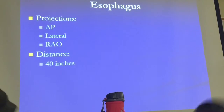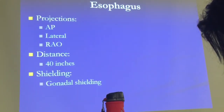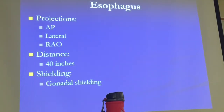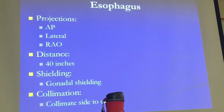The distance for all these projections is 40 inches. Shielding: you can provide gonadal shielding but no thyroid shield and no abdominal shield, because you're going to be seeing the stomach — from the mouth all the way down into the stomach. No shielding above the iliac crest. Collimation: collimate side to side. Do not collimate top or bottom — open it up all the way, because you must include the mouth and the entrance of the esophagus into the stomach.